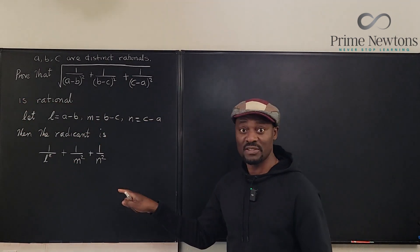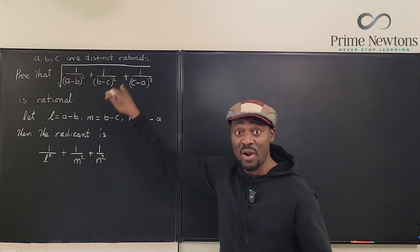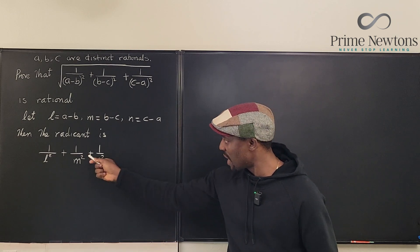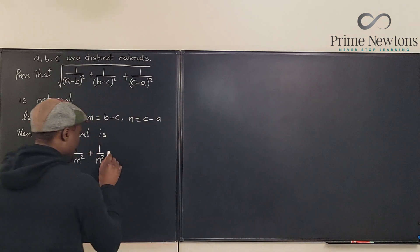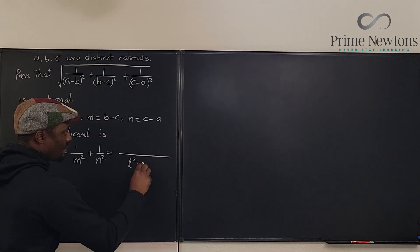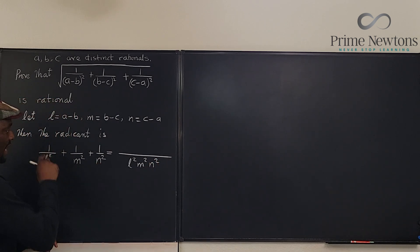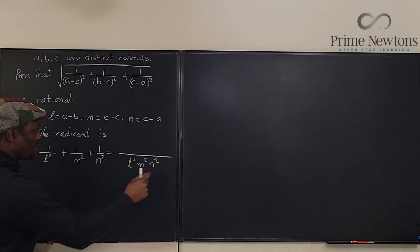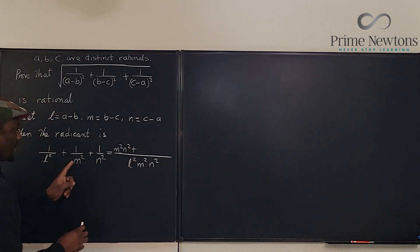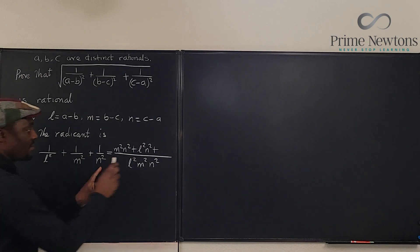If I can show that this is a perfect square, given that A, B, and C are distinct rational numbers, then I'm done. Let's rewrite this and put the terms together. With a common denominator of L squared M squared N squared, on top — multiplying every term by L squared M squared N squared — you get M squared N squared, plus L squared N squared, plus L squared M squared.